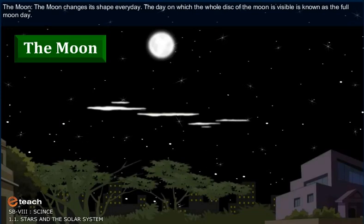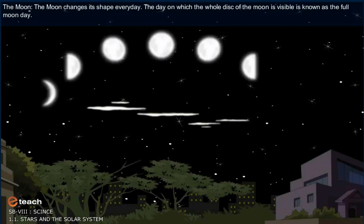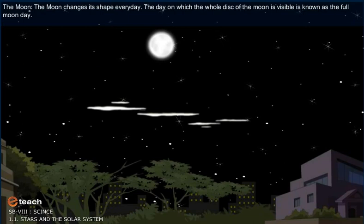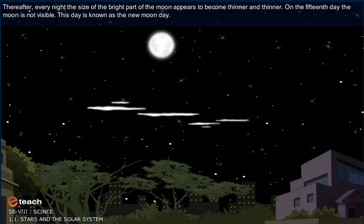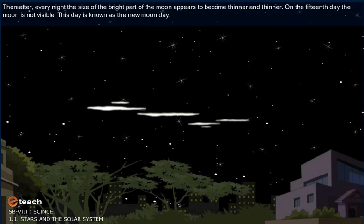The Moon. The moon changes its shape every day. The day on which the whole disk of the moon is visible is known as the full moon day. Thereafter, every night the size of the bright part of the moon appears to become thinner and thinner. On the fifteenth day, the moon is not visible. This day is known as the new moon day.